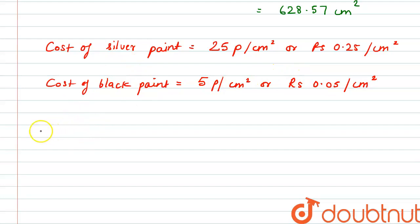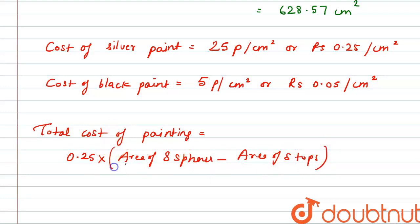So the total cost, the total cost of painting comes out to be 0.25 multiplied by the area of 8 spheres minus area of 8 tops, plus the cost of black paint is 0.05 multiplied by the area of cylinders.